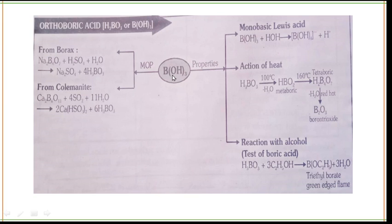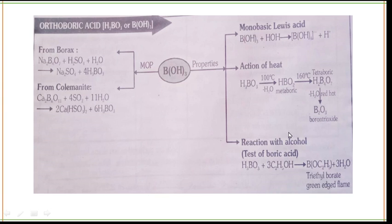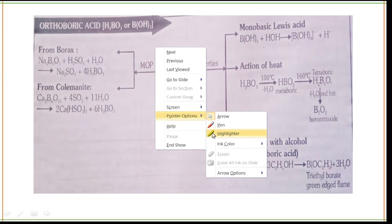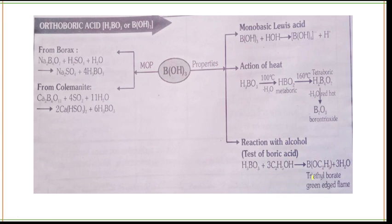The properties of H₃BO₃: reacting B(OH)₃ with H₂O gives [B(OH)₄]⁻ + H⁺. On the action of heat: at 100°C it forms metaboric acid; at 160°C it forms tetraboric acid; in the presence of red heat it forms B₂O₃ (boron trioxide). In reaction with alcohol, this gives the boric acid flame test — at the end you get triethylborate (B(OC₂H₅)₃) and 3H₂O, producing a green-edged flame.